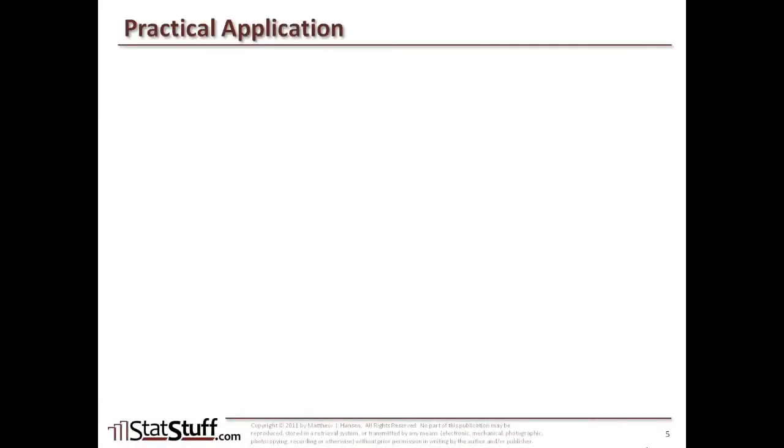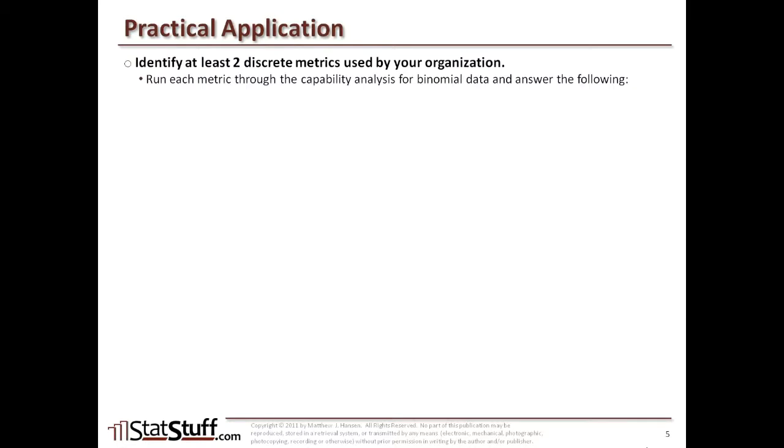Before we close this lesson, let's discuss how we can apply some of these concepts in a practical way. I'd like to identify at least two different discrete metrics that you use within your organization. Collect some historical data that you can run and plug into Minitab and then run each of those metrics and the data for each one through the capability analysis for binomial data like we use in this lesson. Based on the output from that particular analysis, try to define what is the DPMO and what's the Z-score. Then would you conclude that the process is capable or is it not capable?